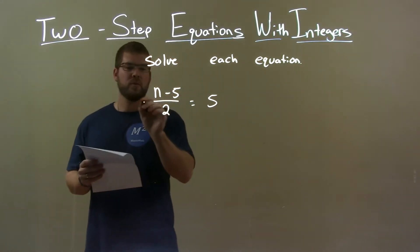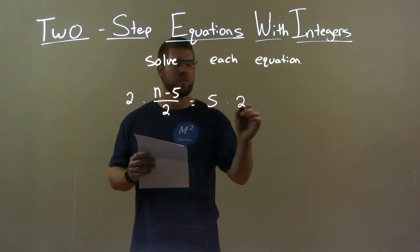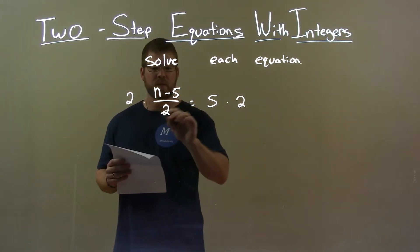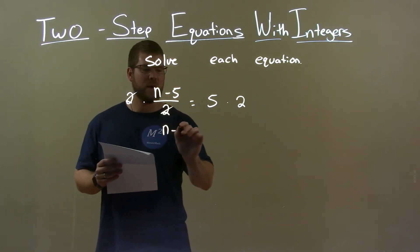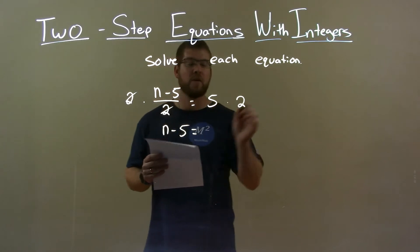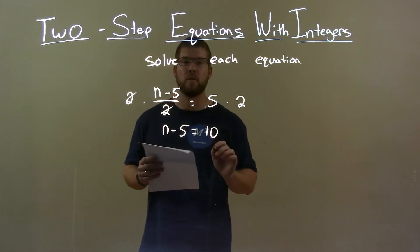First step, I need to multiply 2 to both sides. We're divided by 2. Opposite of division is multiplication. These 2's cancel, leaving me with n minus 5 by itself on the left. 5 times 2 is 10 on the right.